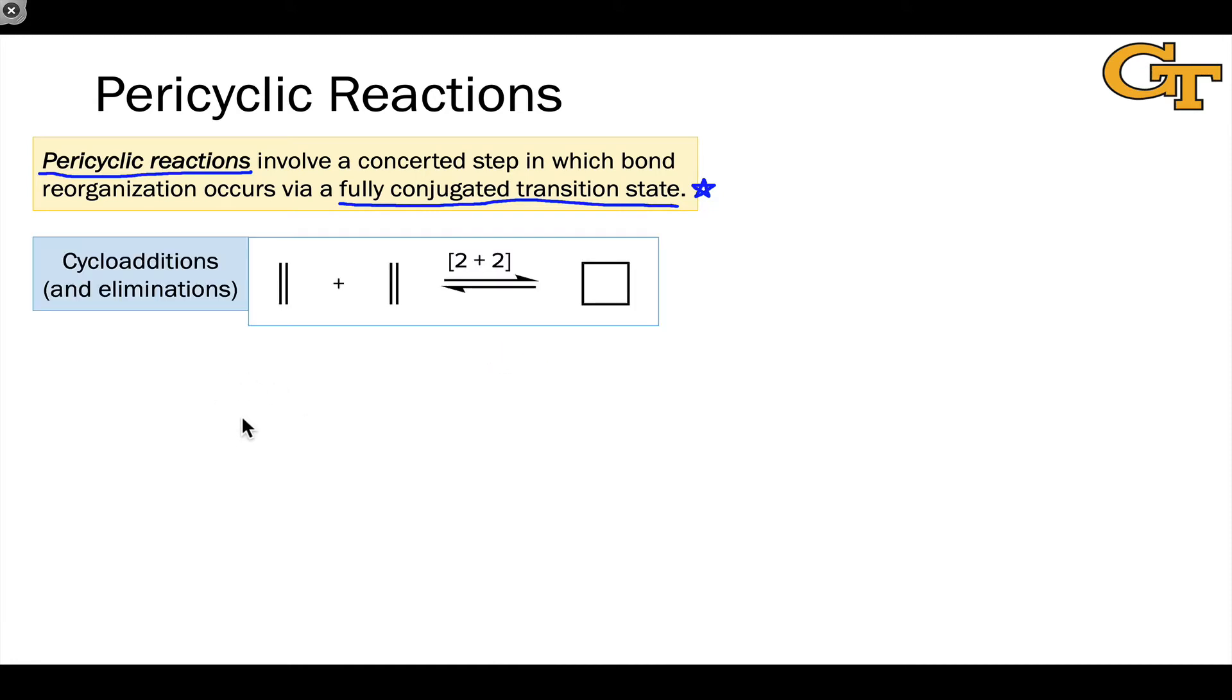There are three types of pericyclic reactions that we'll see. Cycloadditions involve the combination of two separate pi systems to form a ring, and these are named using the size of the pi systems involved. For example, when two two-atom pi systems are involved, such as two molecules of ethylene, the cycloaddition is called a 2 plus 2, and the product is a four-membered cyclobutane ring.